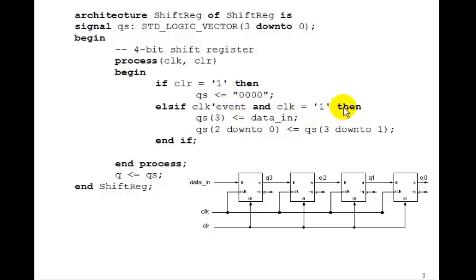clock tick event and clock equals 1, then Q3 gets data in. Q3 gets data in, and then Qs2 down to 0 gets Qs3 down to 1. So Q2 gets Q3, Q1 gets Q2, and Q0 gets Q1. So we can do all those three operations in this one statement.